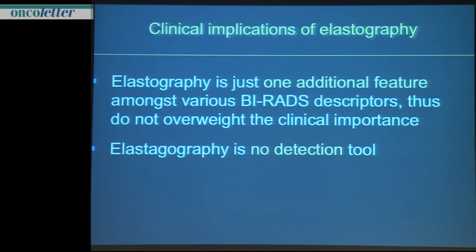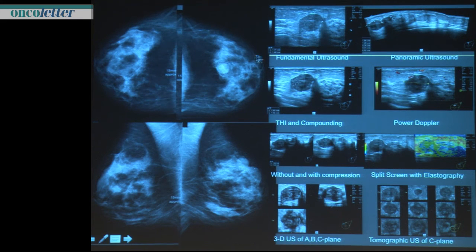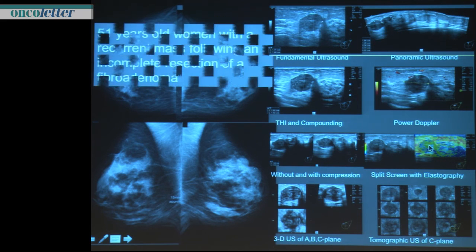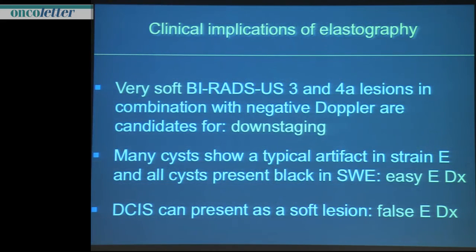We should not overweight the clinical impact. It's definitely not a detection or screening tool. Advanced imaging has various facets — here we have a nodule that is hard, finally a fibroadenoma with abundance of cells. More clinical messages: very soft BIRADS 3 and 4 lesions can be downstaged. Many cysts show a typical artifact, which is a strong supporting argument from elastography.